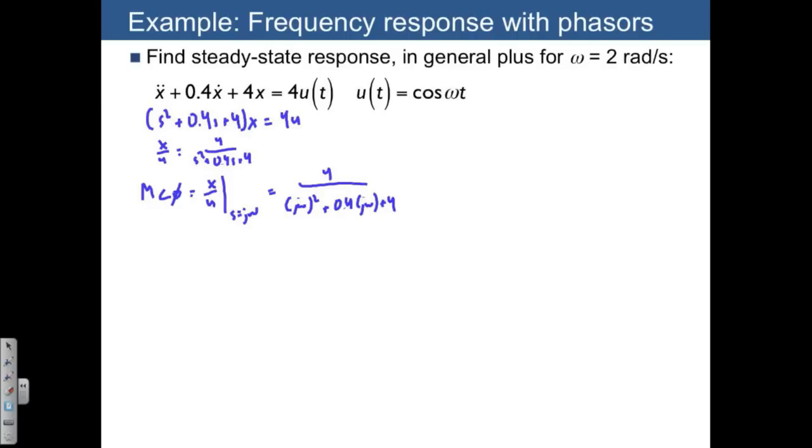As usual, we have a numerator and a denominator. The numerator is 4 angle 0, and then the denominator we can plot in the complex plane. There's a real and an imaginary part. The real part is 4 minus omega squared, and then the imaginary part is 0.4 omega.